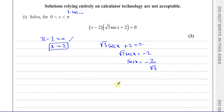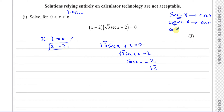We know that the secant ratio is the reciprocal trig function for cosine. An easy way to remember: the third letter tells you which function it's from — sec has 'c', so its reciprocal is cosine. So if sec x = −2/√3, then cos x = −√3/2.